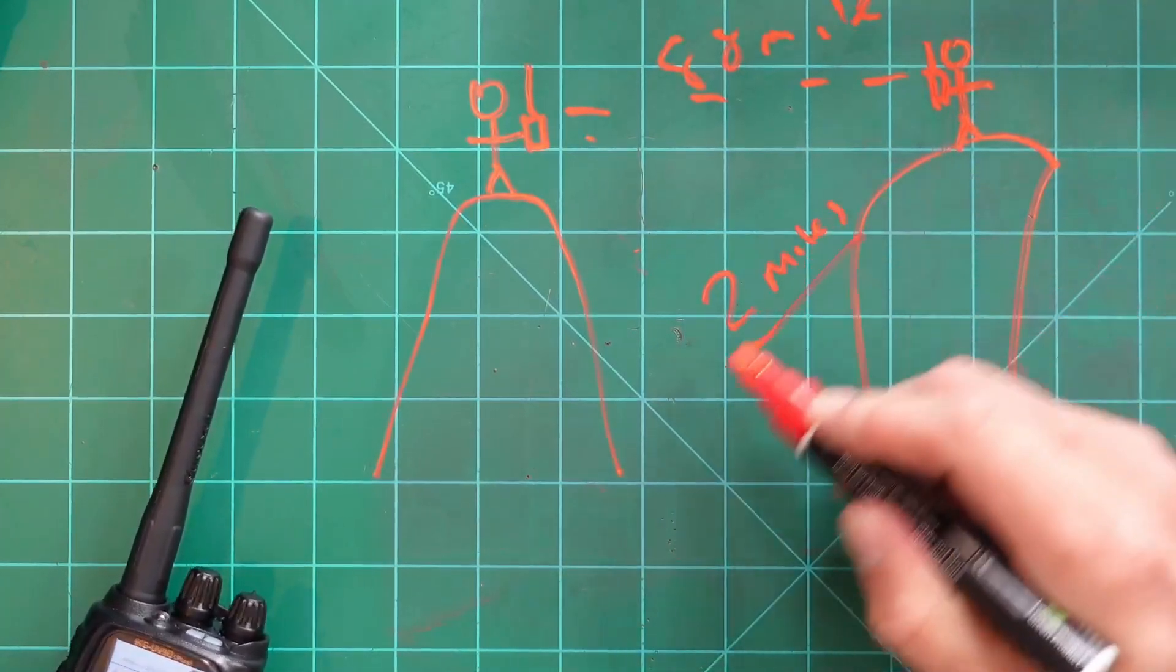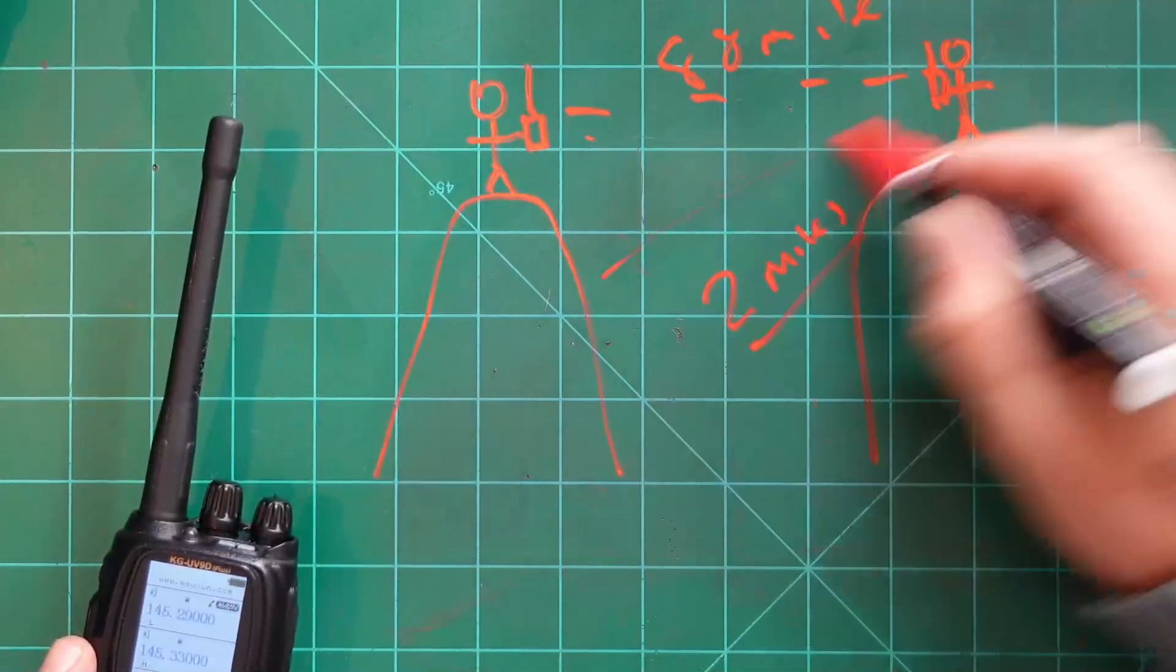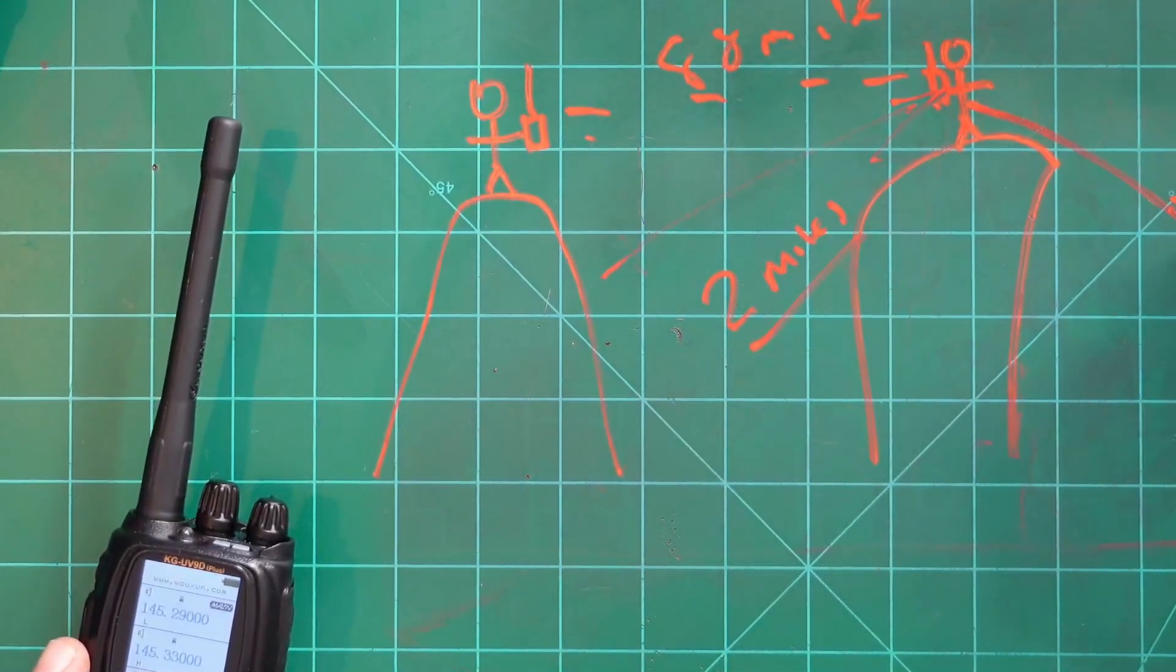Now, if you want to talk to a repeater, you might actually be able to contact people further out because you're actually relaying your signal through a repeater.